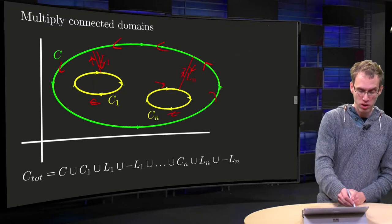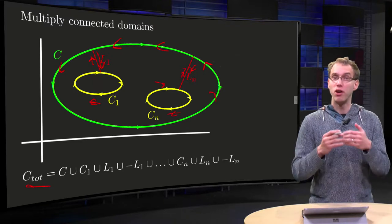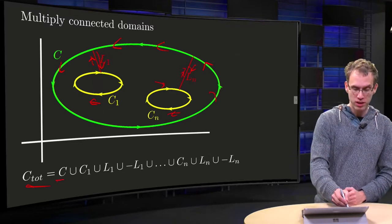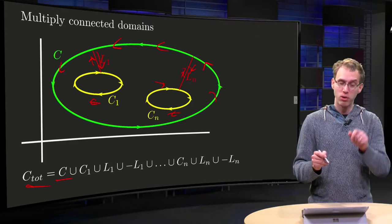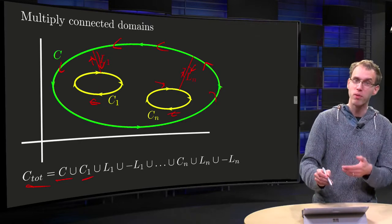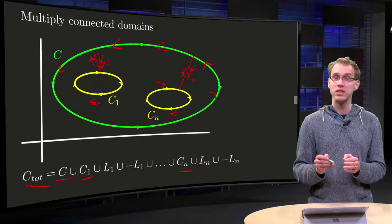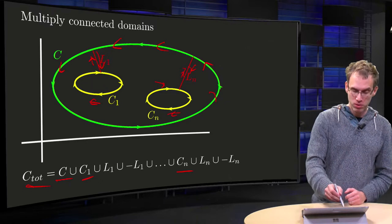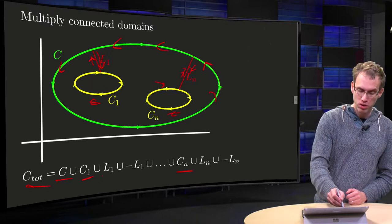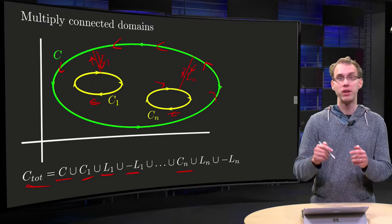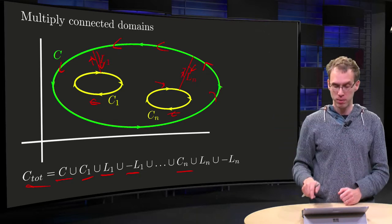and we continue our journey until we are back at where we started. So we have a simple closed contour as a sum. So our c total will be a combination of c, which goes counterclockwise, the c1 going clockwise, c2 going clockwise, etc., until cn going clockwise, and then we have contributions of l1 and minus l1, because we go in and out via l1, etc., for all of them.